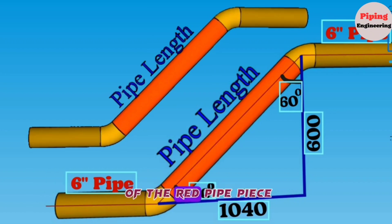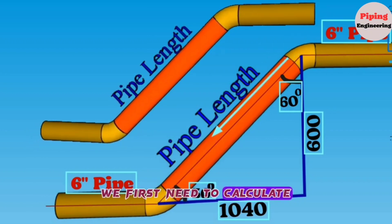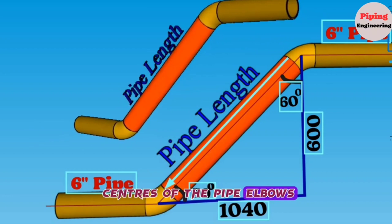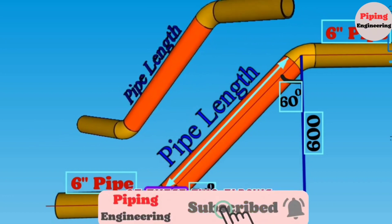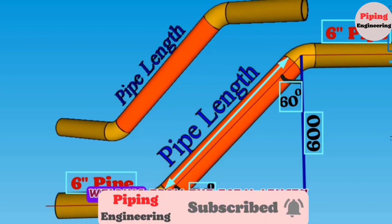To find the length of the red pipe piece, we first need to calculate the distance between the centers of the pipe elbows. Then we can find the length of the red pipe by subtracting the lengths of these two elbows and two gaps for welding from the total length.